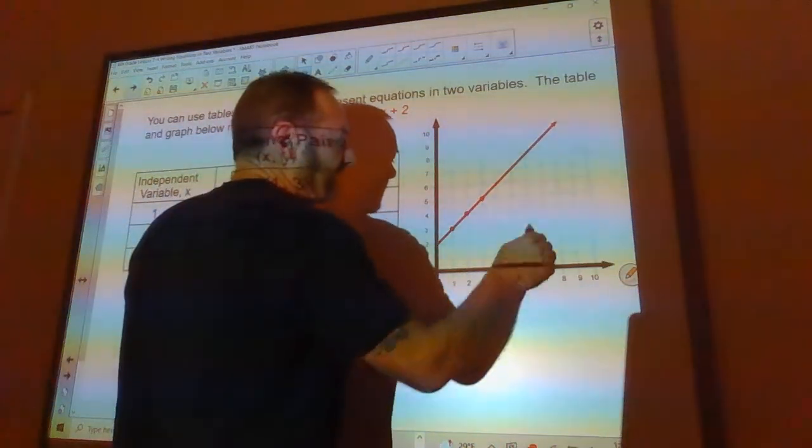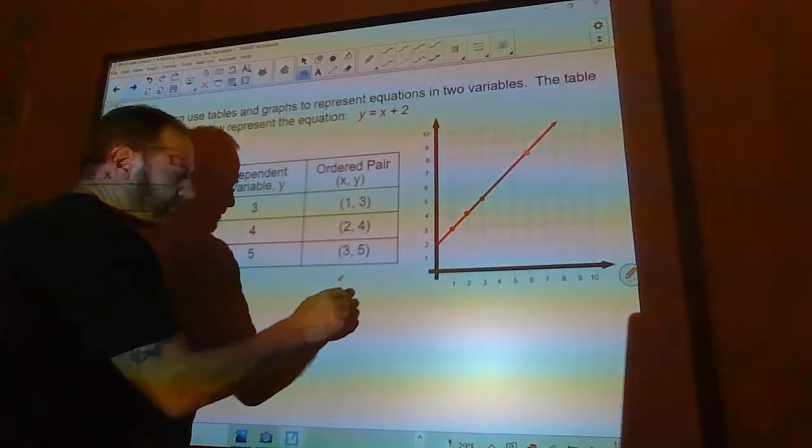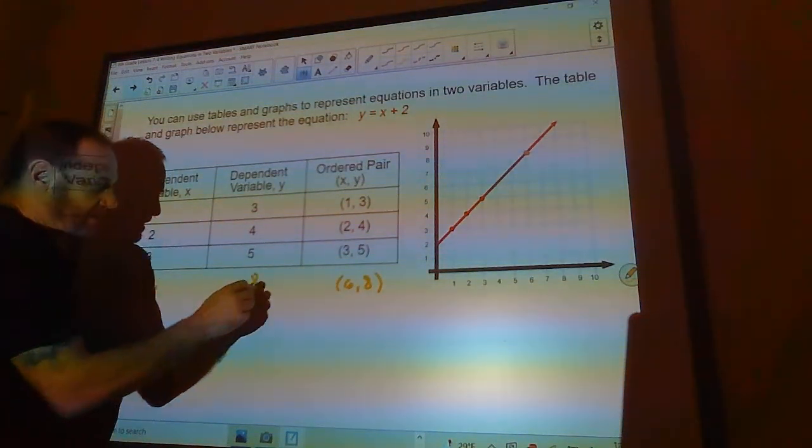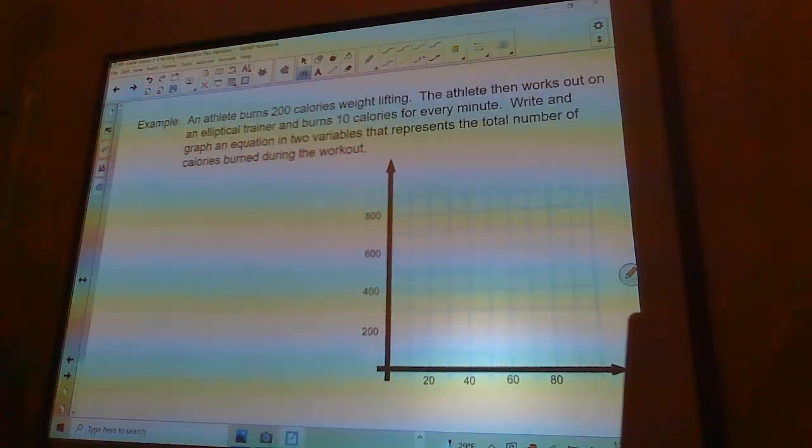So I could go out here to 6 and I can see, (6, 8) would be on here. And here would be my input would be 6 and my output would be 8. The athlete burns 200 calories weightlifting. The athlete then works out on an elliptical trainer and burns 10 calories for every minute. Write and graph an equation in two variables that represents the total number of calories burned during the workout.